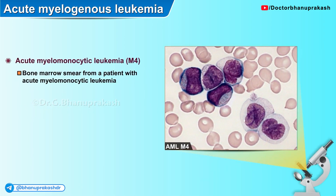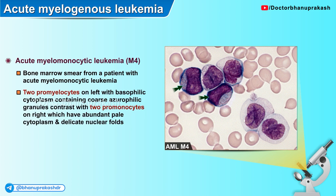Here is a bone marrow smear from a patient with acute myelomonocytic leukemia diagnosed on flow cytometry. The two promyelocytes on the left with basophilic cytoplasm containing coarse azurophilic granules contrast with the two promyelocytes on the right, which have abundant pale cytoplasm and delicate nuclear folds.